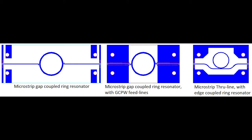Shown here are three different sets of ring resonators — all microstrip structures. The one on the left is a microstrip edge-coupled ring resonator, with feed lines coming in from the left and right with a gap between them and the ring. At lower frequencies, say 10 or 12 gigahertz, this is a pretty good structure for accurately determining dielectric constant. At higher frequencies, specifically at millimeter wave, these open-ended feed lines will resonate on their own and very often disturb the ring resonance.